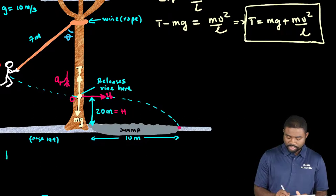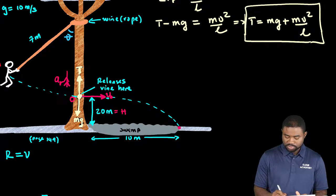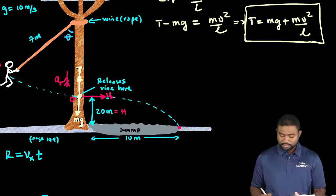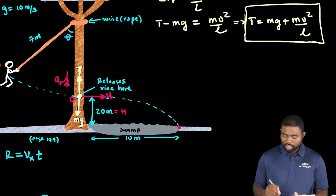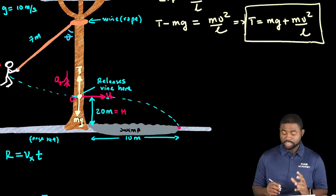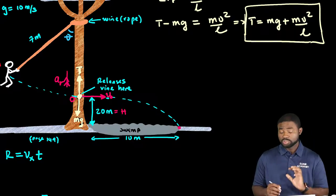And we are going to do this as follows. We know that the range r is equal to vx multiplied by t. But what is t? To calculate t, we need to consider the vertical motion.